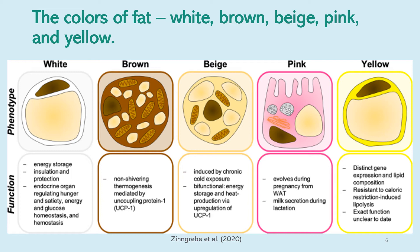A white adipocyte functions as energy storage. It also functions as insulation and protection, and sometimes as an endocrine organ, regulating hunger and satiety, energy and glucose homeostasis. The brown adipocyte functions as non-shivering thermogenesis, mediated by uncoupling protein 1. The beige adipocyte is induced by chronic cold exposure and is bifunctional, accessing energy storage and heat production via upregulation of UCP1.